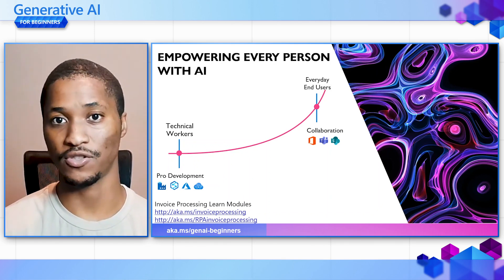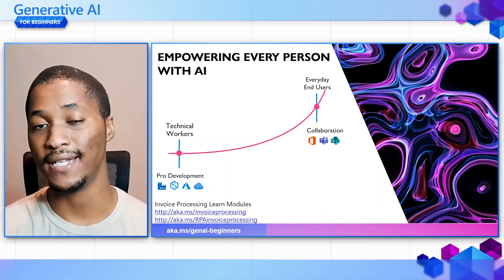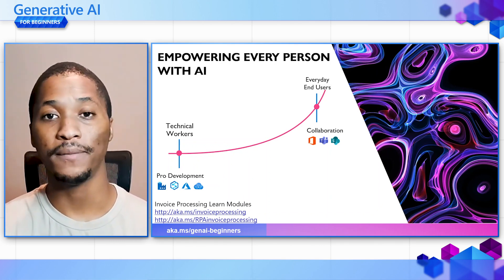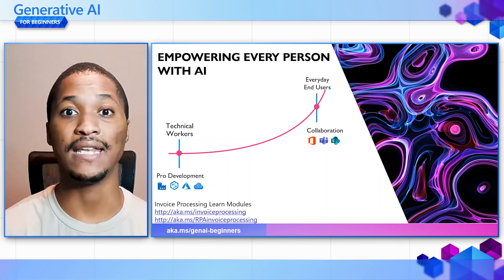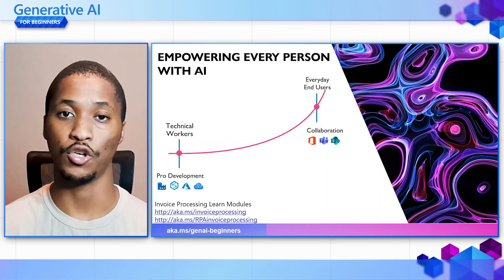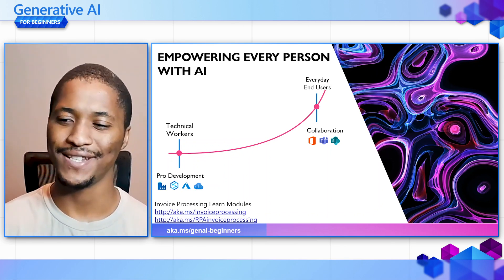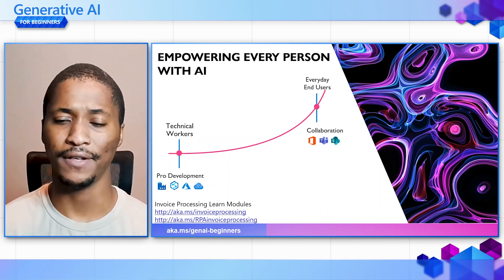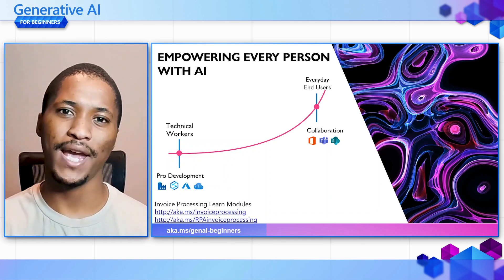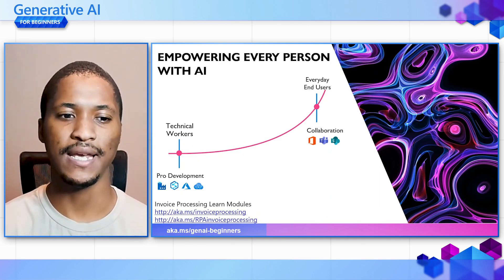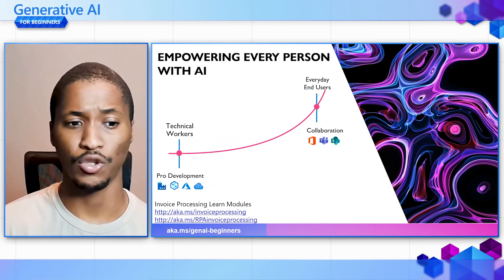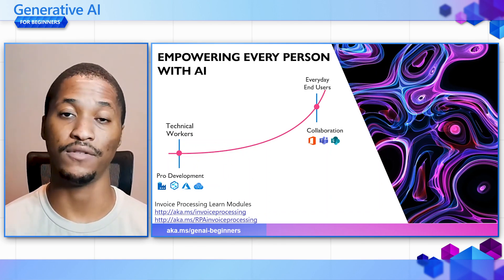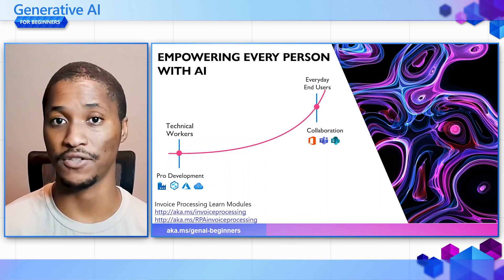You can also have Teams transcriptions — you record a Teams meeting and then pull a transcript to hear what people were saying if you couldn't make it out on the audio. And of course, the new Copilot capabilities in Microsoft 365. Before, we had technical workers using AI through pro-code development around Microsoft Azure and the cognitive services within Azure.